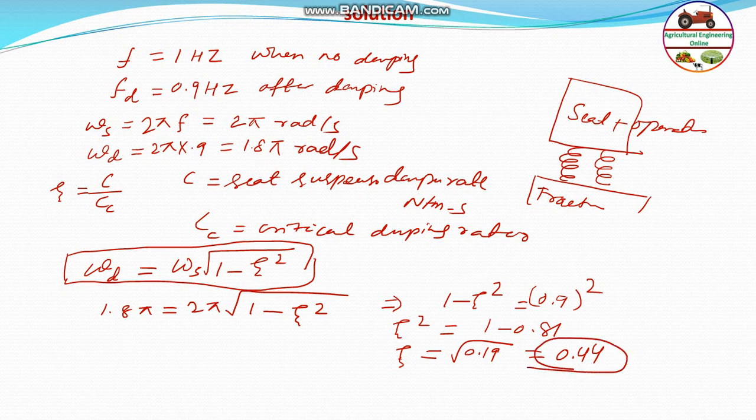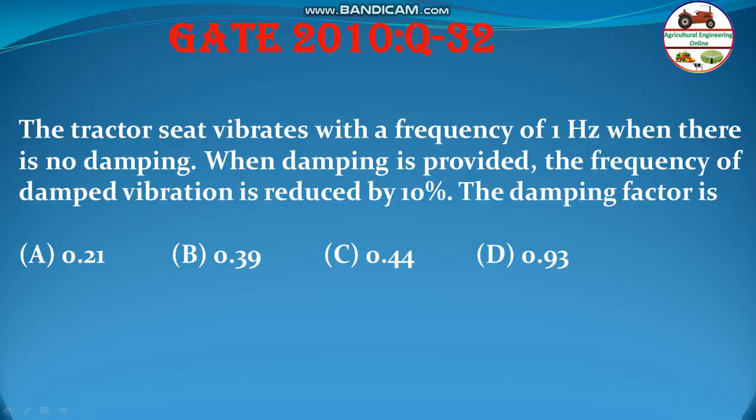This is the answer. This is the damping factor for this design for the seat, specially the reduction of the frequency from the tractor to the seat. If the frequency is 1 hertz here, it becomes 0.9 hertz, so the damping factor equals 0.44. Therefore, the answer is C.